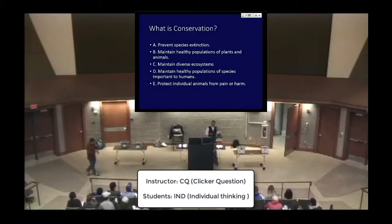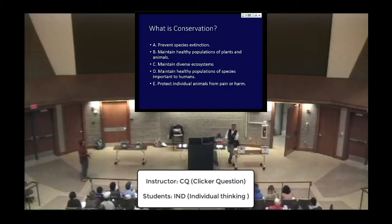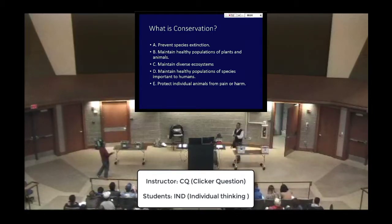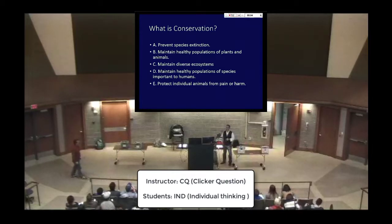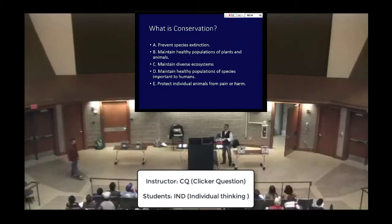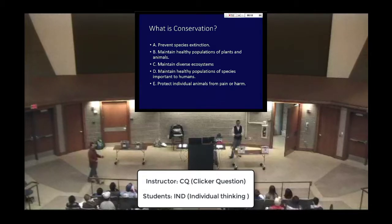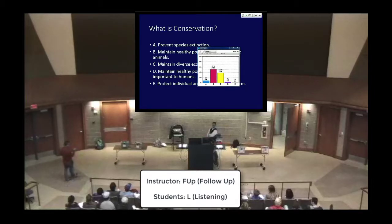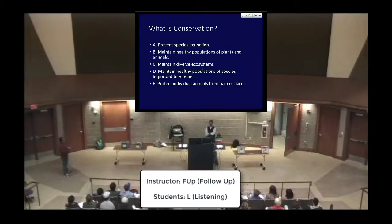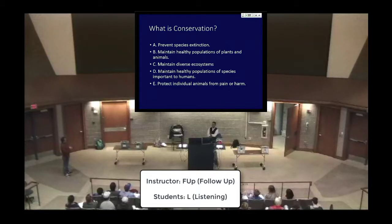So let's take a second here. I just want to poll everybody about what they think of when we talk about conservation. You might agree with more than one of these, but pick the one that matches your idea of conservation most closely. Let's do this as individuals — pick what you personally think. Okay, lots of support for B and C. Mostly B and C, with a few for A and a few for D. So most people did not think it's prevent species extinction. Most people came down on the side of maintaining healthy populations of plants and animals and maintaining diverse ecosystems, with a few thinking it's maintaining healthy populations of species important to humans.